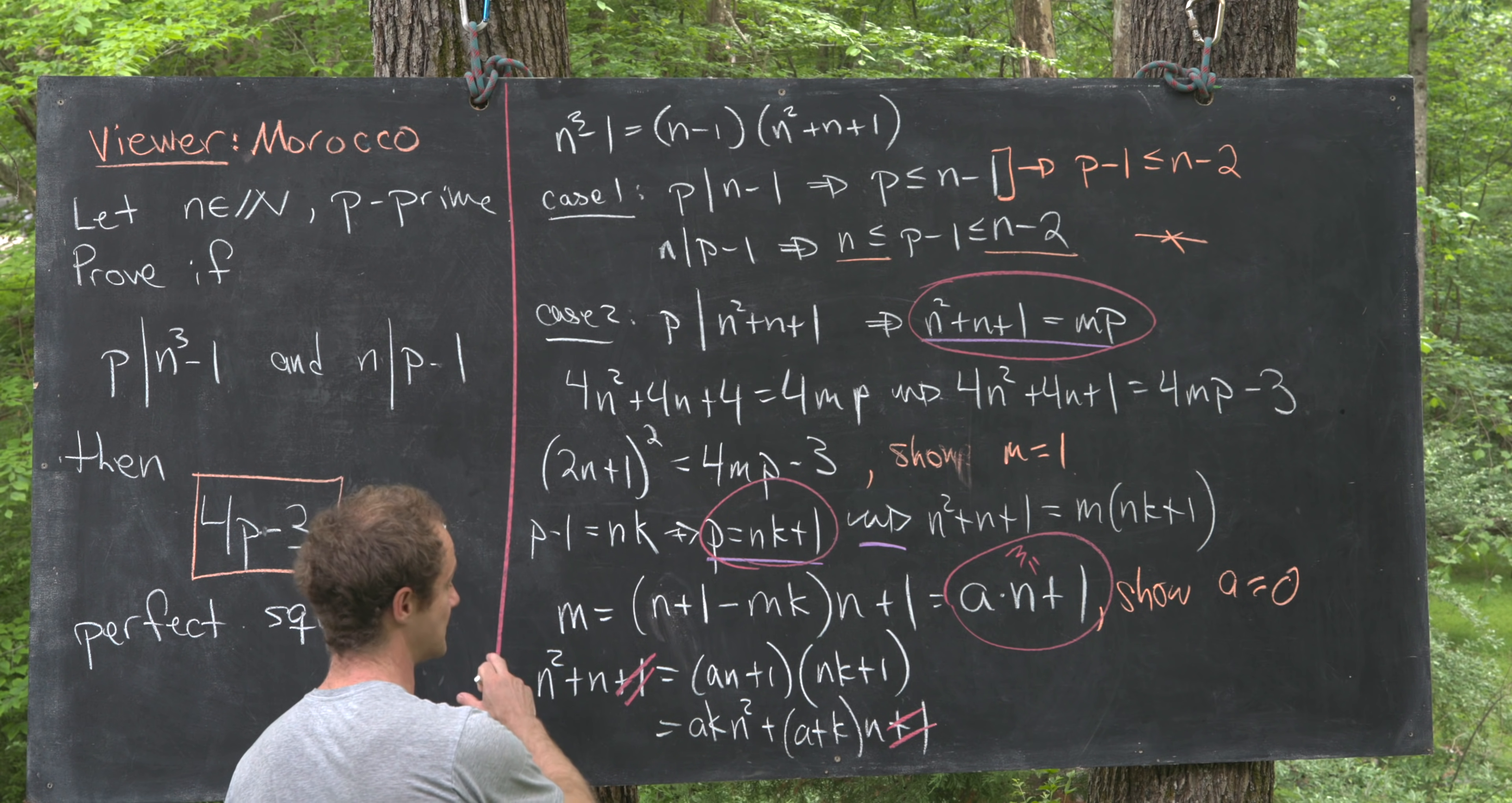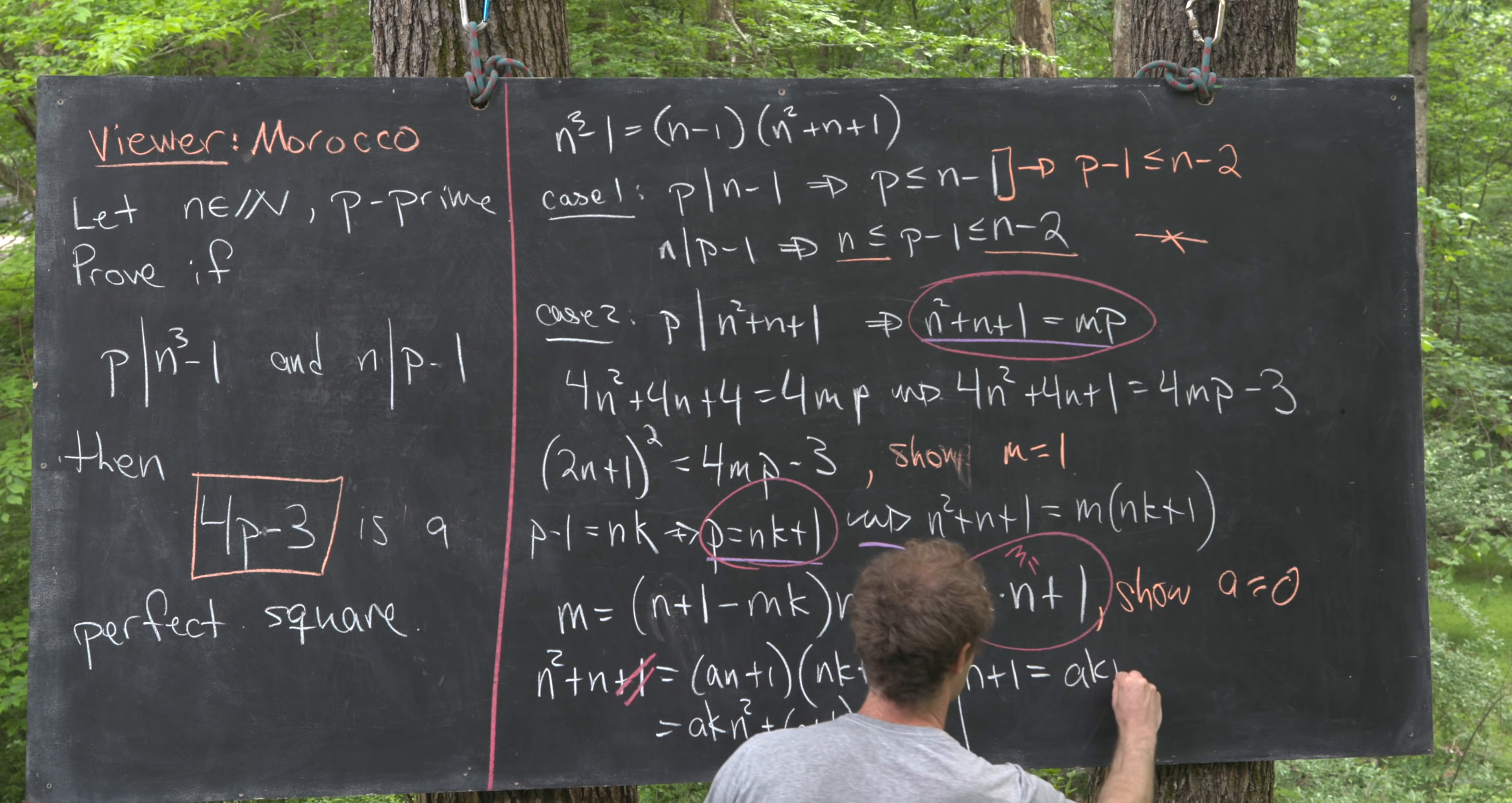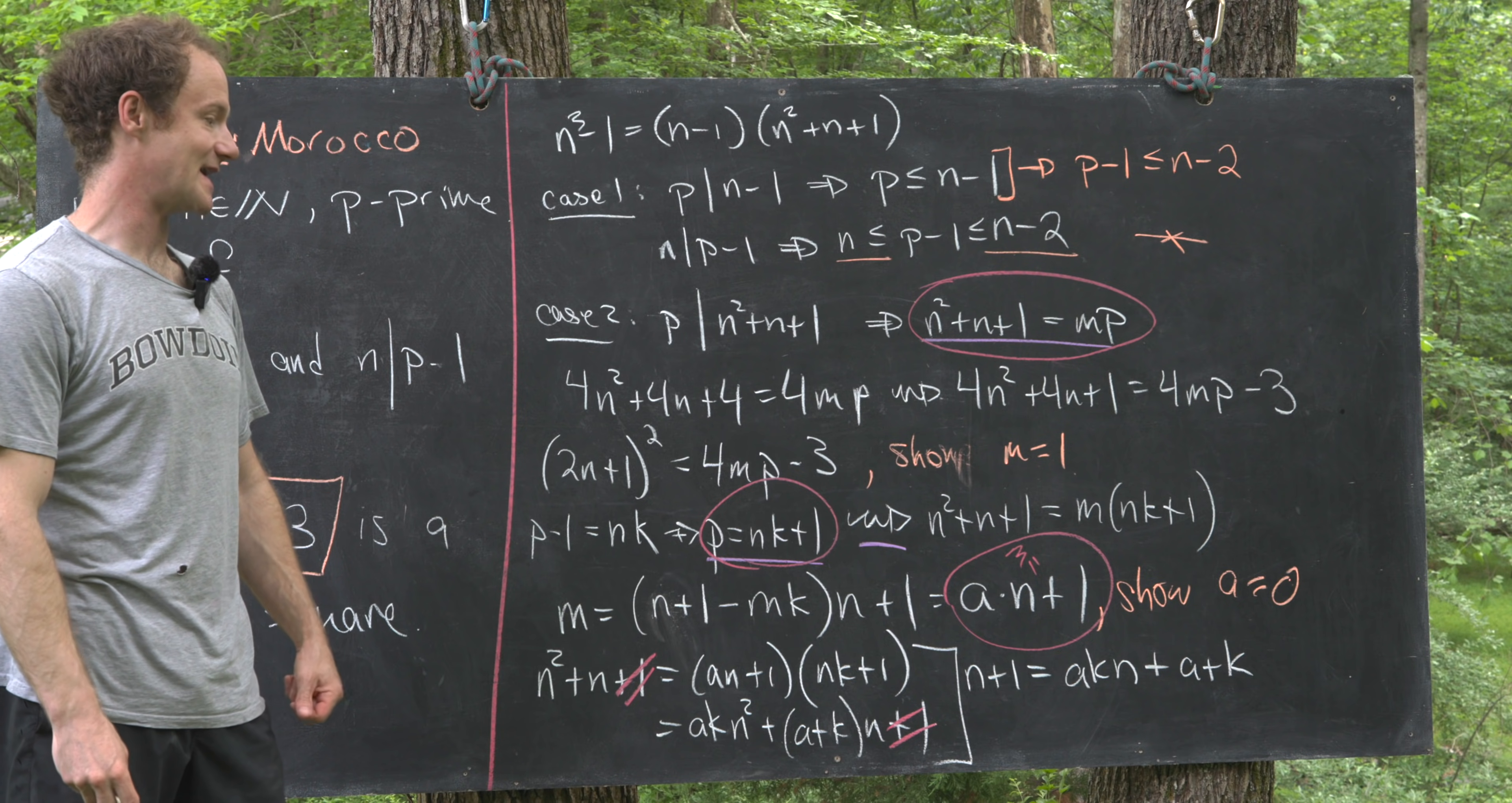Because n is a natural number, so it's not 0, so dividing this entire equation by n will give us n+1 equals ak times n plus a+k. So again, that's from dividing this equation by n.